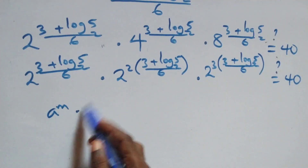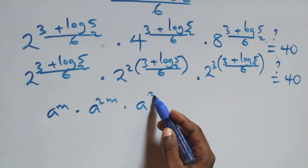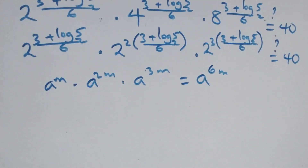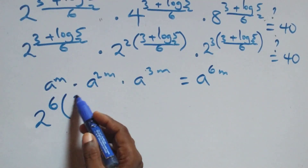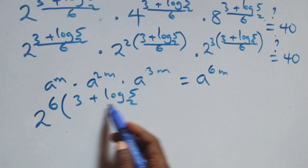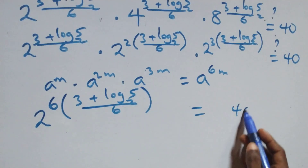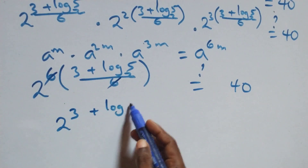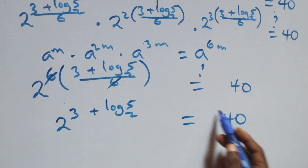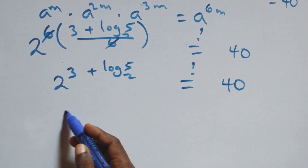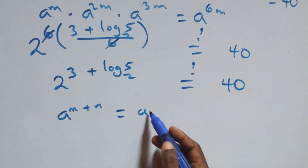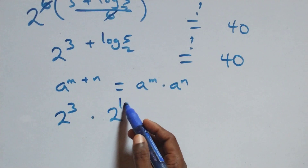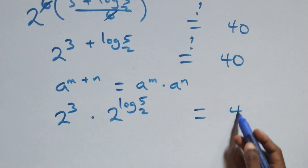Using the power rule, 2^x times 2^(2x) times 2^(3x) gives 2 raised to power m plus 2m plus 3m, which equals 2 raised to power 6m. Here we can write it as 2 raised to power 6 times (3 plus log 5 base 2) all over 6. The 6 in the numerator and denominator cancel each other, leaving 2 raised to power 3 plus log 5 base 2, which equals 40.